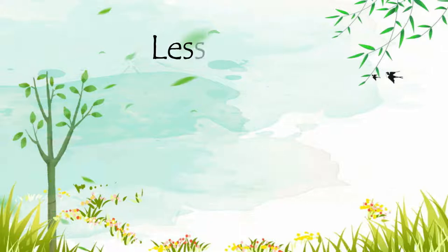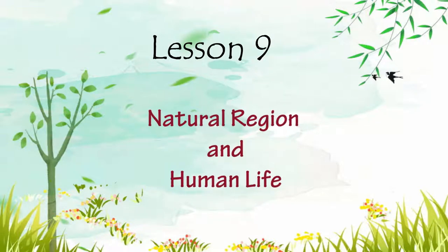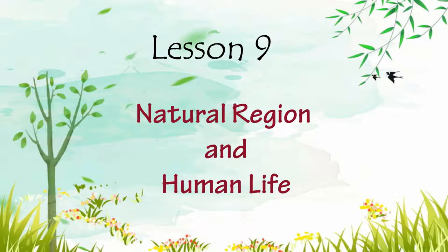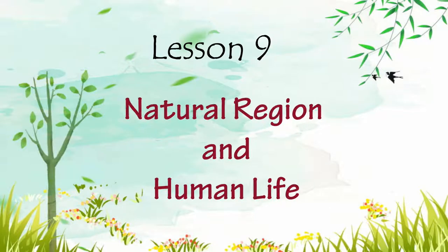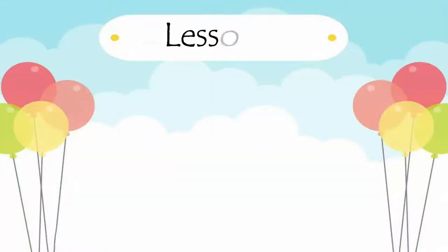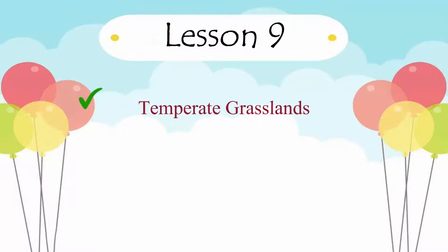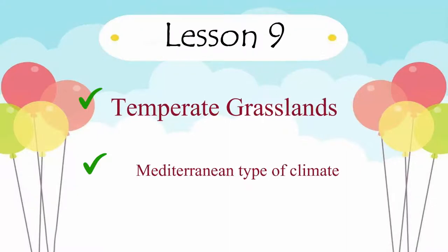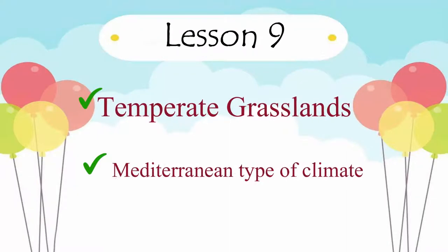Let us know the main points of the lesson Natural Region and Human Life Part 1. In this lesson, we shall know about the temperate grasslands and Mediterranean type of climate.